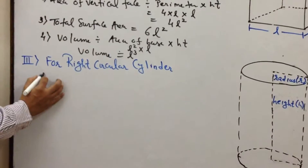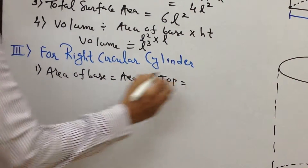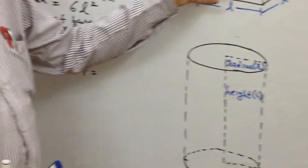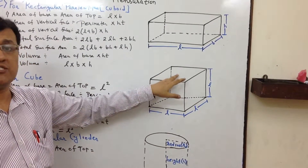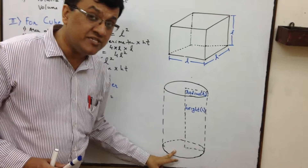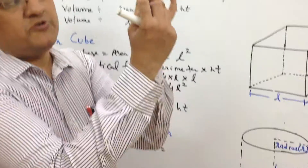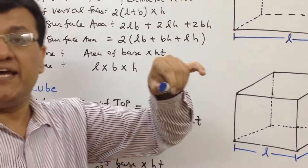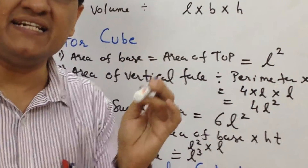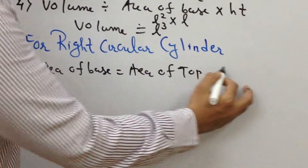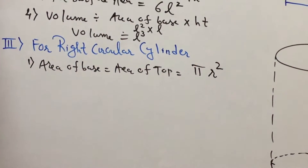The very first thing is: area of base is equal to area of top. In each of the three cases, the base figure and the top figure happen to be the same. For the parallelepiped, the base was rectangle and top was rectangle; for cube, base was square and top was square. Here in cylinder, the base is nothing but a circle, and the top is also a circle. So the area of base equals area of top, which is the area of a circle — pi r squared.